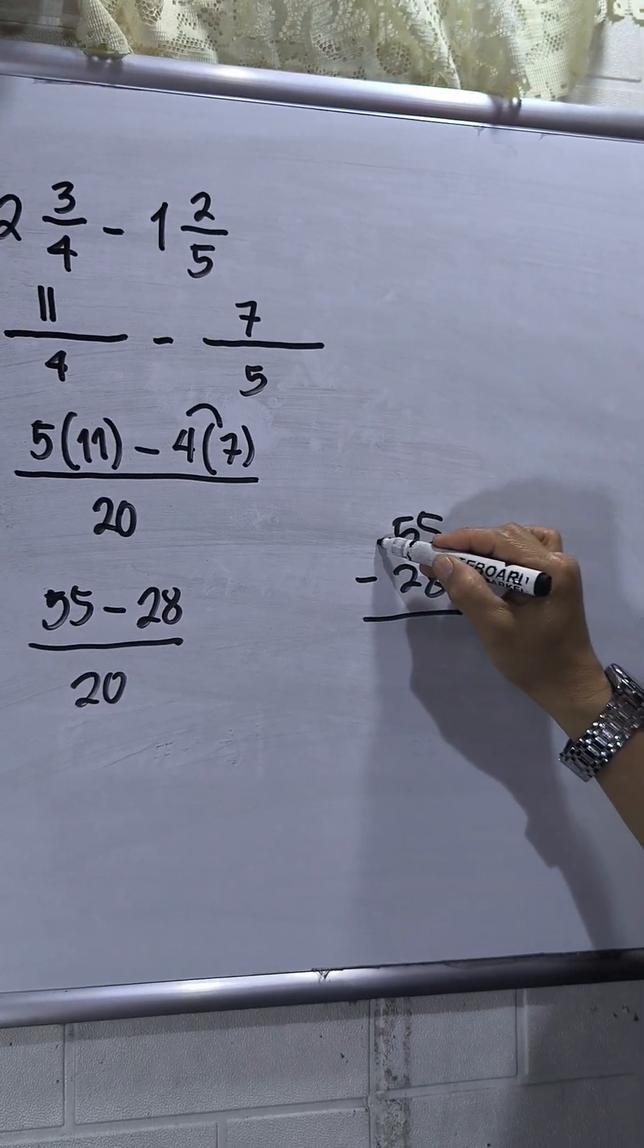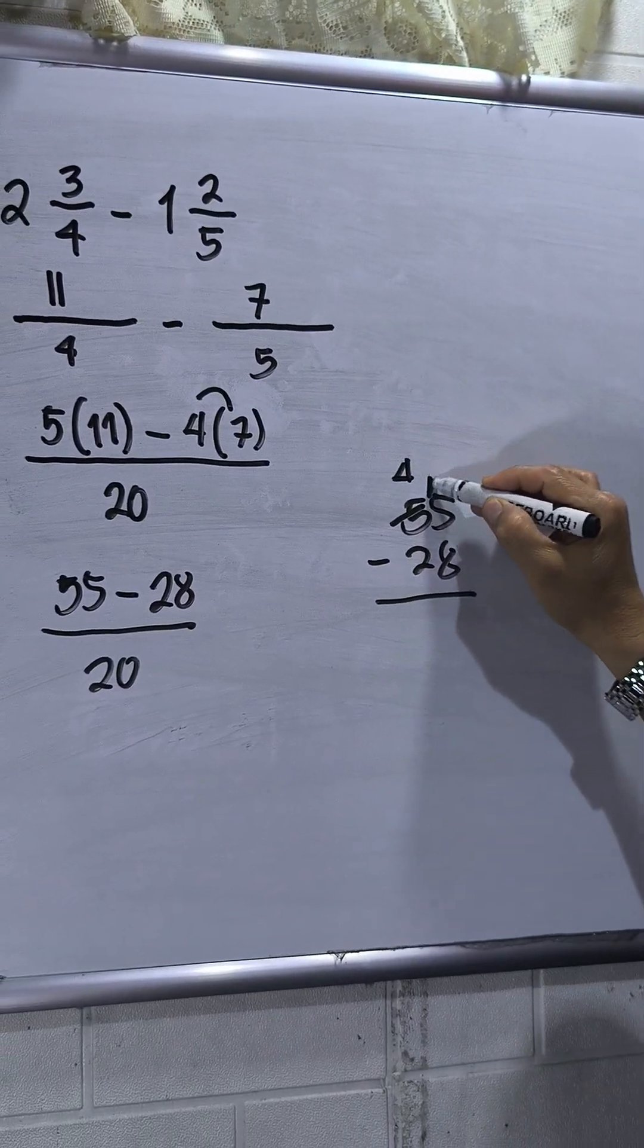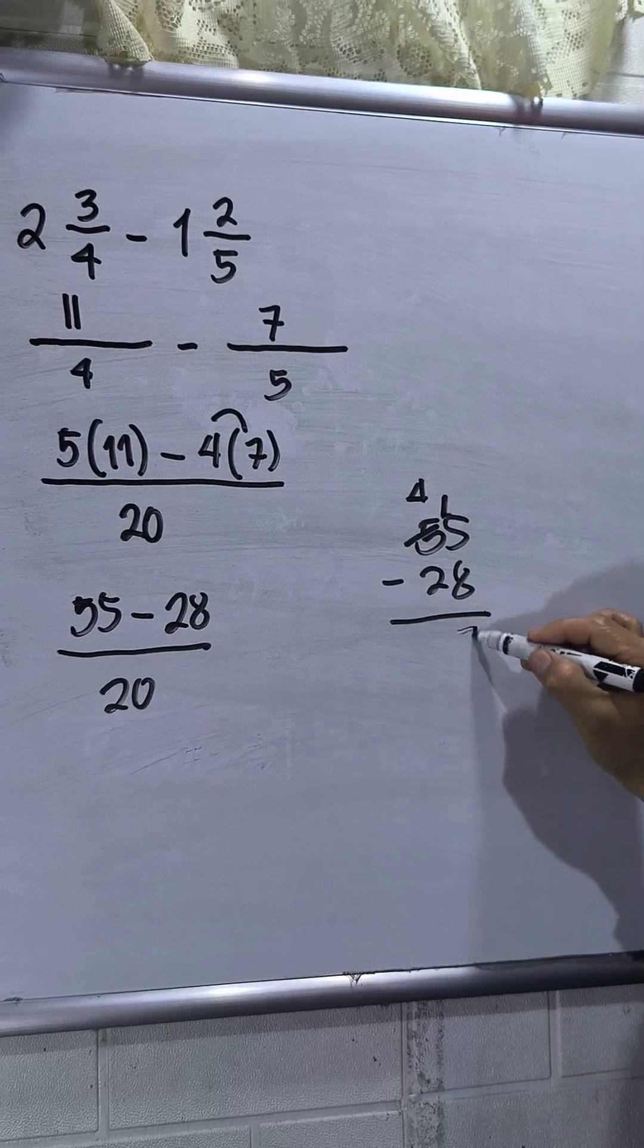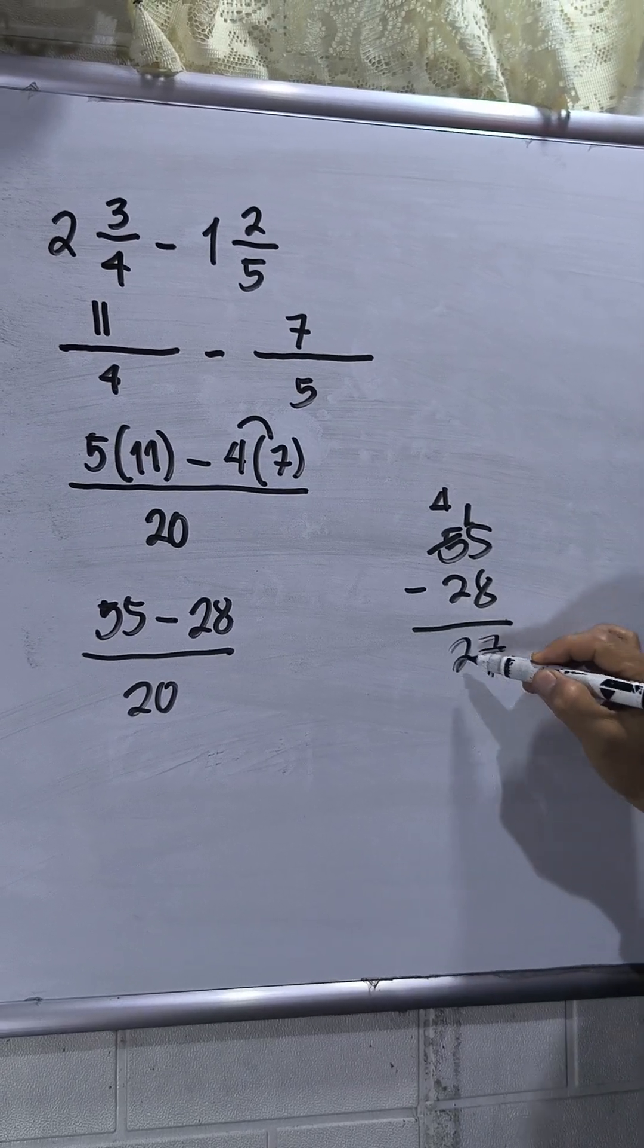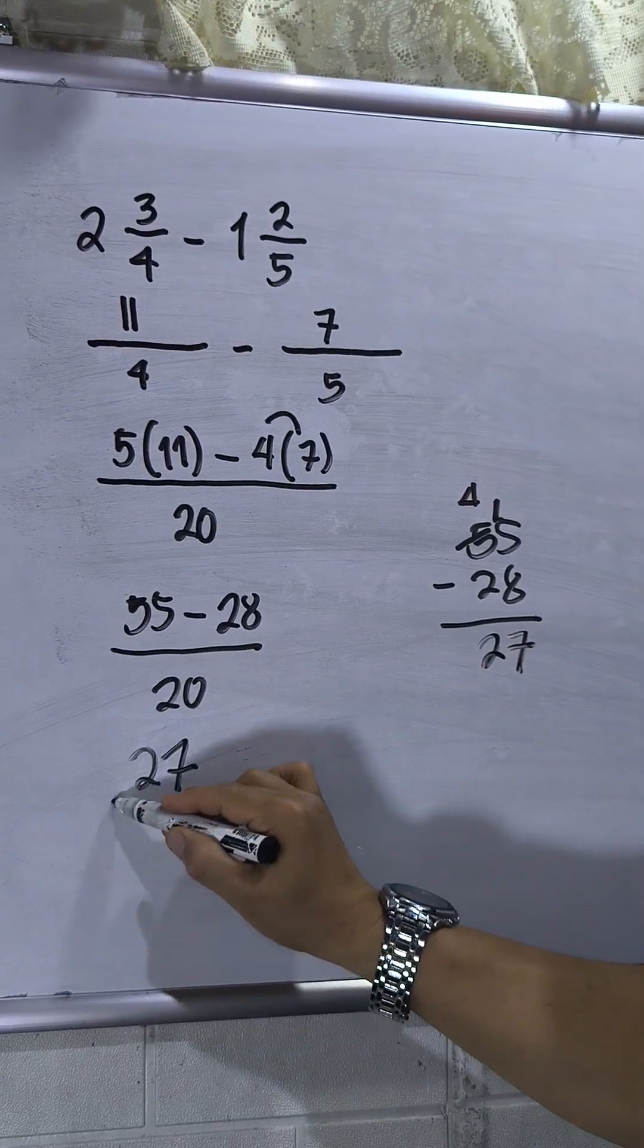Then 55 minus 28. So borrow, this will be 4, then this will be 15, so 7. Then 4 minus 2, that is 2. So I have now 27 over 20.